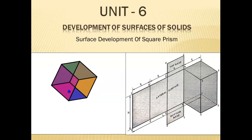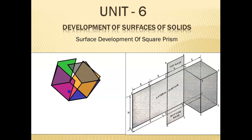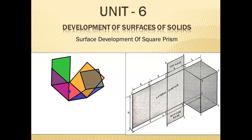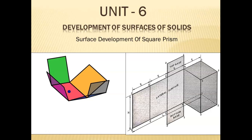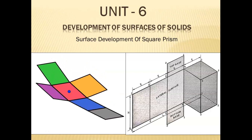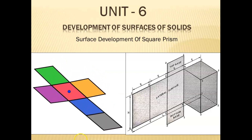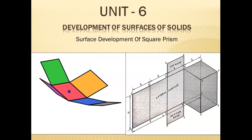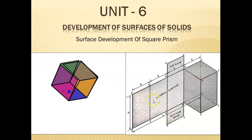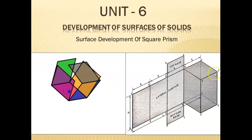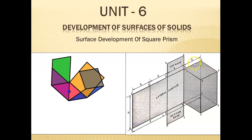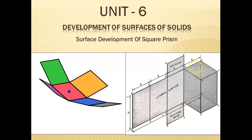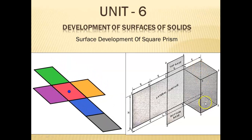Hello friends. After the surface development of cylinder and cone, now we will see how to develop the lateral surface of a square prism. This comes under unit number six, that is development of surface of solid. In this figure you can see a square prism. It is called a square prism because top and bottom faces are square.